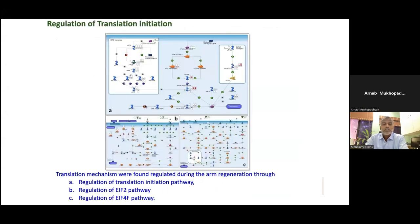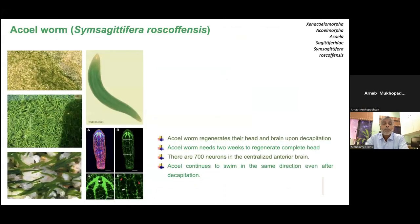Translational initiation pathway was also found associated. Apart from that, we also use a scaleworm called Syllis gracilis. If you cut this animal into two halves, both parts will regenerate — this is very unique. It regenerates much faster, and here regeneration of nervous tissue also occurs. We are trying to understand this as well in our lab.